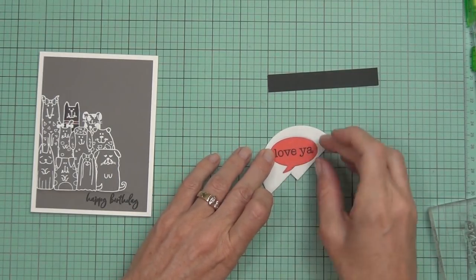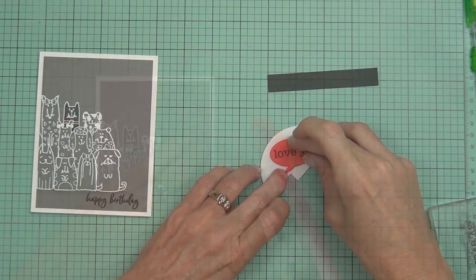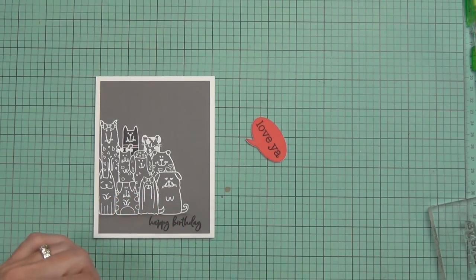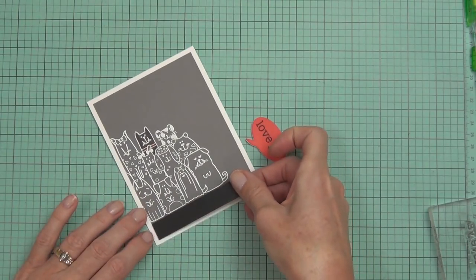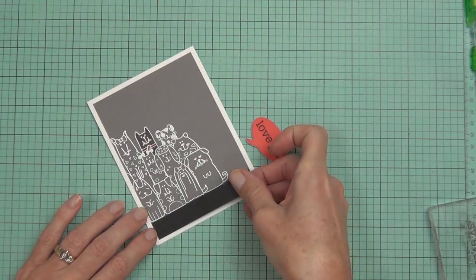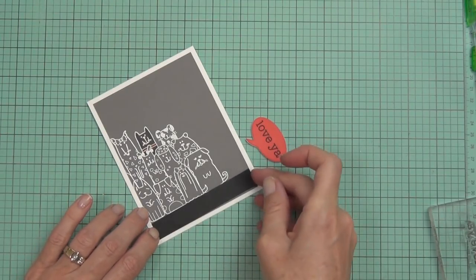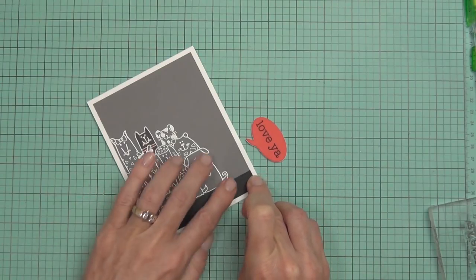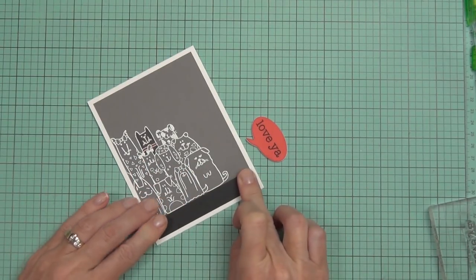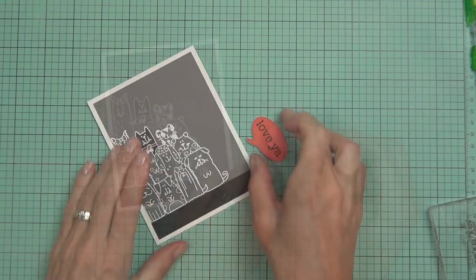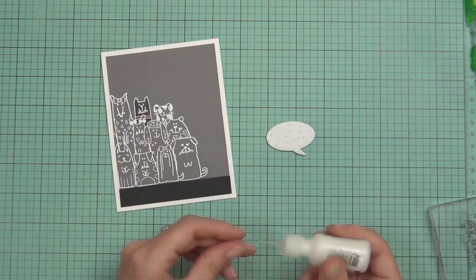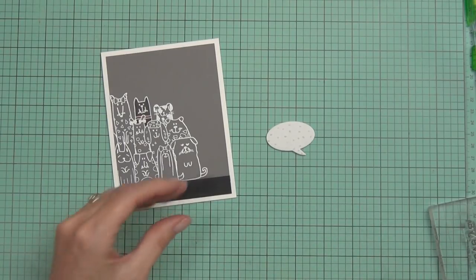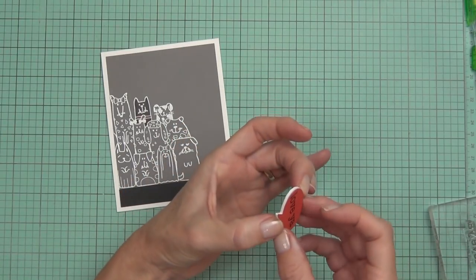I've added it on bright red cardstock and I really like this so much better. I stamped out the 'love ya' sentiment—it's actually from the Part of the Pack stamp set. To fix up the base of my card and cover up the happy birthday sentiment, all I did was add a piece of black cardstock directly to the front of the card. I like this much better. Then I added some fun foam to the back of my speech bubble and now I'm a happy girl.